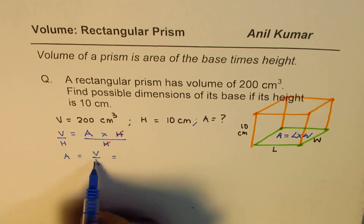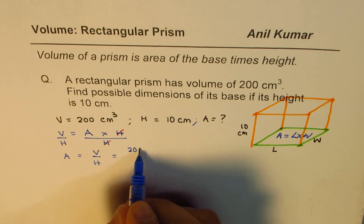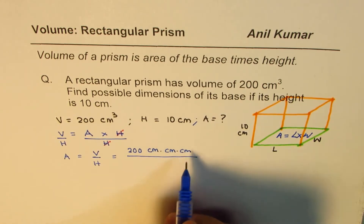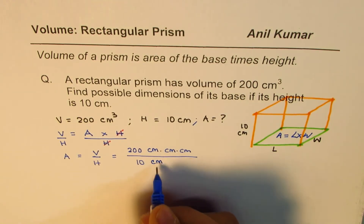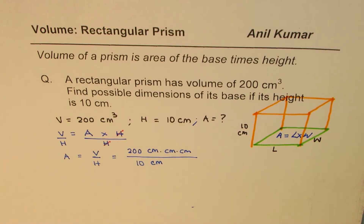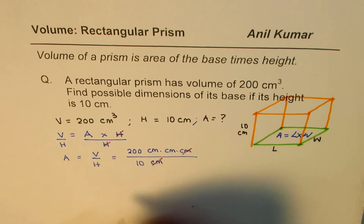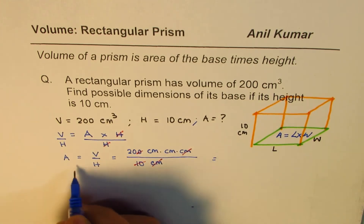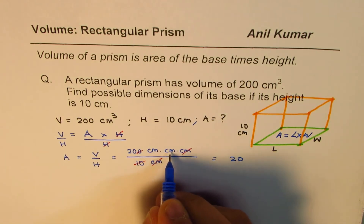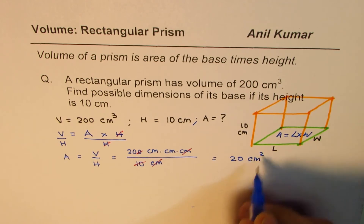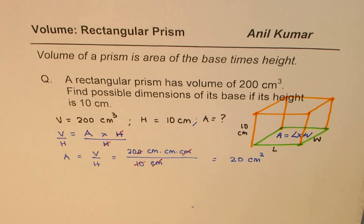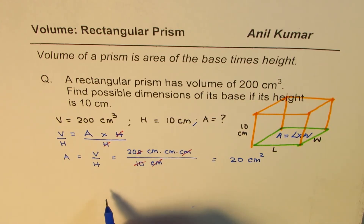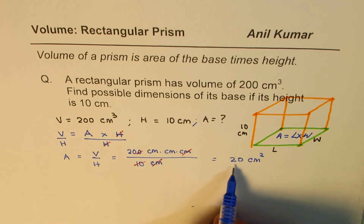Area is volume divided by height. Volume is 200 centimeters cubed — centimeter times centimeter times centimeter gives you centimeter cubed. Height is 10 centimeters. Let's simplify: one of the centimeters gets canceled off, and 200 divided by 10 gives you 20. So that gives you area equals 20 centimeters squared — centimeter times centimeter is centimeter square. This is very important to understand when you begin working with formulas. Areas is now known to you as 20 centimeters square.